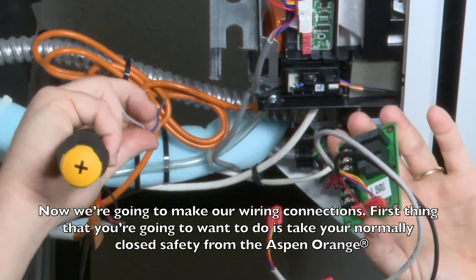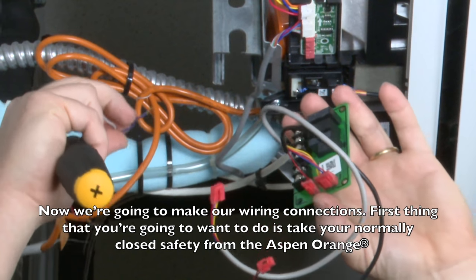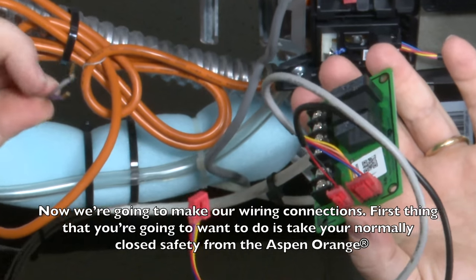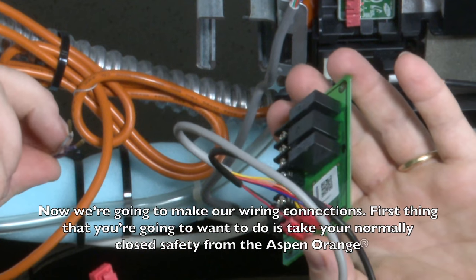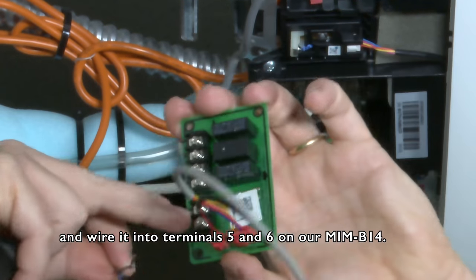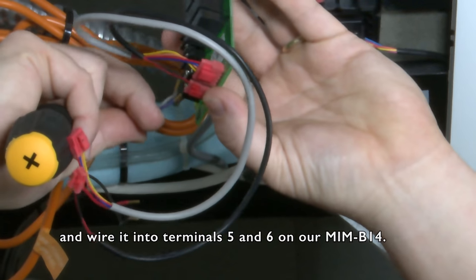Now we're going to make our wiring connections. First thing you're going to want to do is take your normally closed safety from the Aspen orange and wire it into terminals 5 and 6 on our MIM-B14.